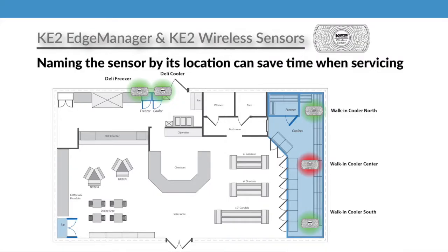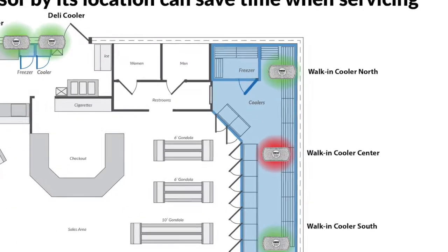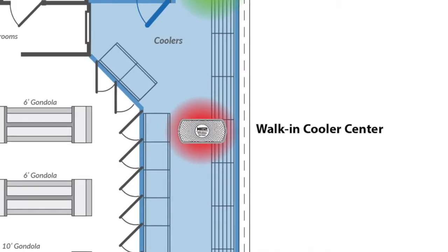Renaming your sensors might not seem like a priority, and if you're only using two or three, you may be right. But with even five sensors, it can be a huge time saver later, helping you quickly locate the sensor in the building.